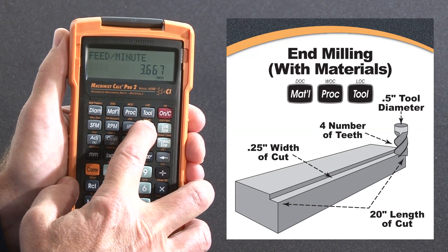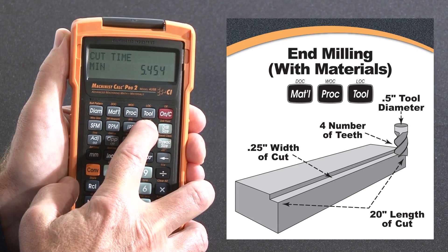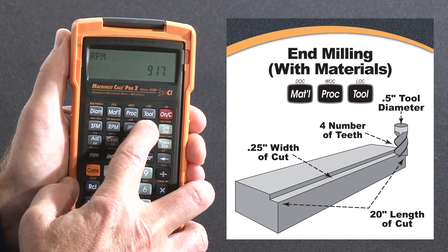Now I can solve my feed per minute, 3.667 inches per minute. My cut time is going to be 5.454 minutes. My RPM is going to be 917.